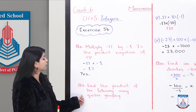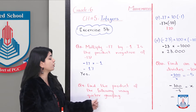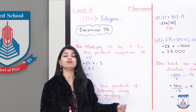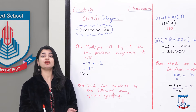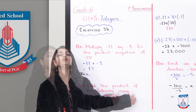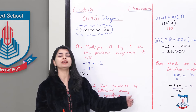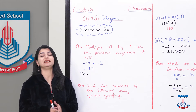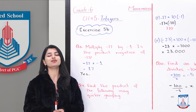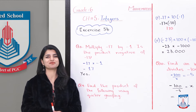Find the product of the following using quicker grouping. You have different parts to do. You have to find the product. How do you find the product? You find the product by multiplying. Let's go see how to do these parts.